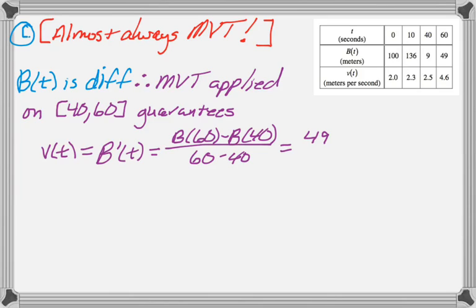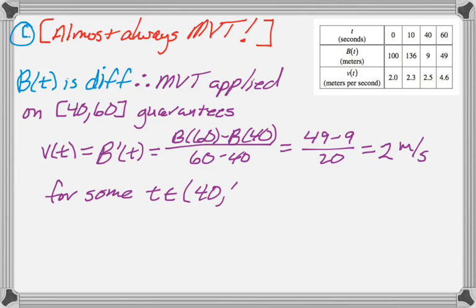Fill in some values from the table. That's 49 minus 9 over 20, which is 40 over 20, which is 2. And then that would be in meters per second because B(t) has those units. So the mean value theorem guarantees that B'(t) equals 2 for some value of T that's between 40 and 60.